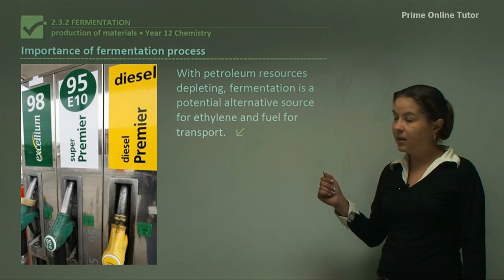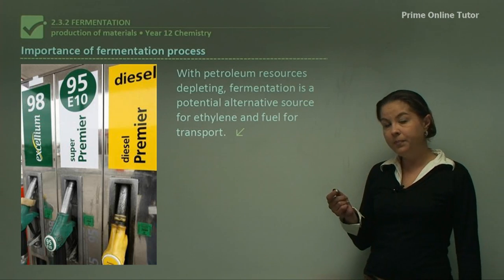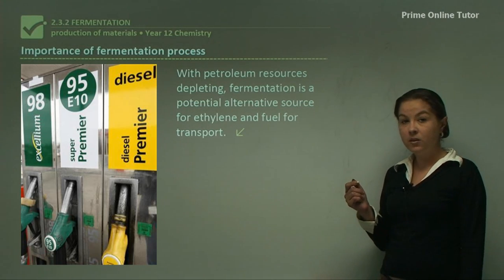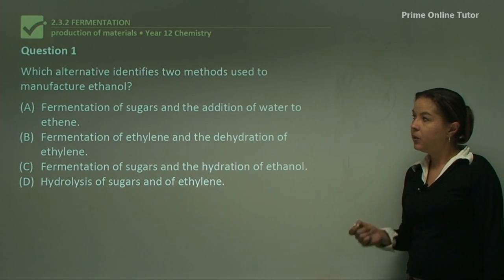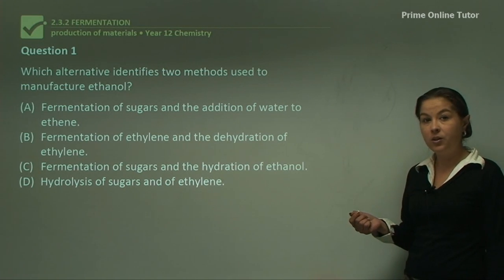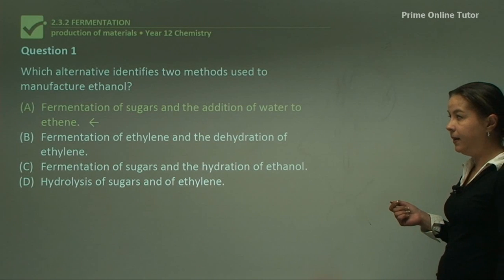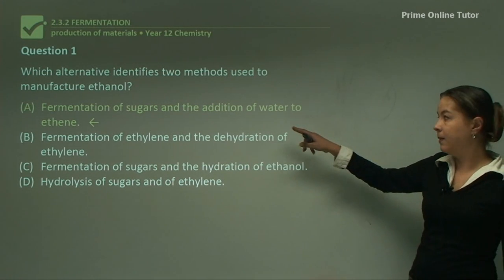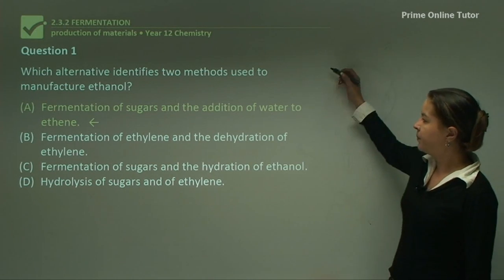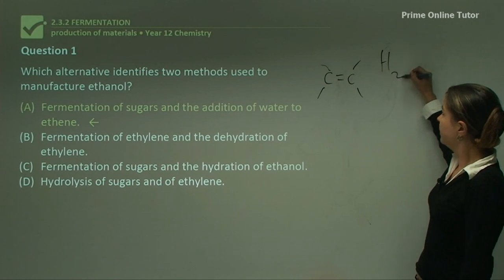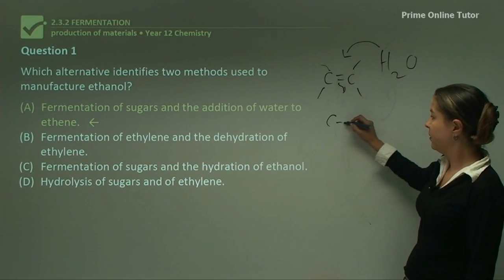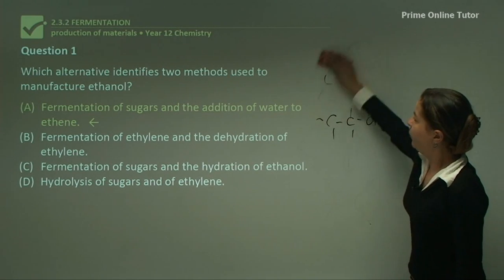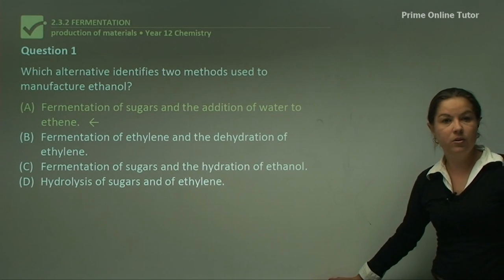That wraps up the discussion on fermentation. To summarize: if you take a sugar and react it with a yeast enzyme, you'll get ethanol and carbon dioxide gas, and heat will also be produced. Now for question one: which alternative identifies two methods used in the manufacture of ethanol? The answer is part A — the fermentation of sugars, and the addition of water to ethene. If we take ethene and add water, the double bond breaks and we get ethanol. So there are two ways to produce ethanol.